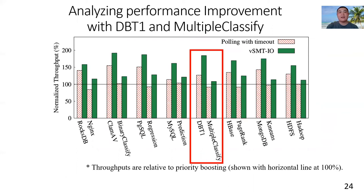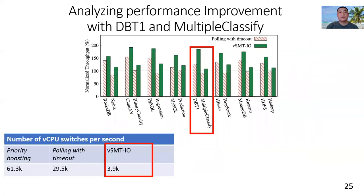We choose this pair because vSMTIO can improve DBT1's IO performance by the largest percentage over polling with timeout. For IO performance, we find the effectiveness of vSMTIO on improving IO performance is reflected by reduced VCPU switches.